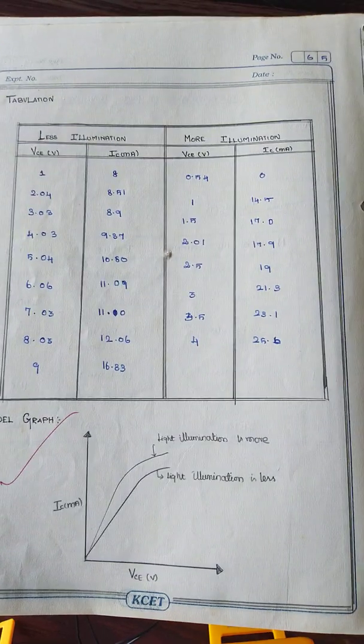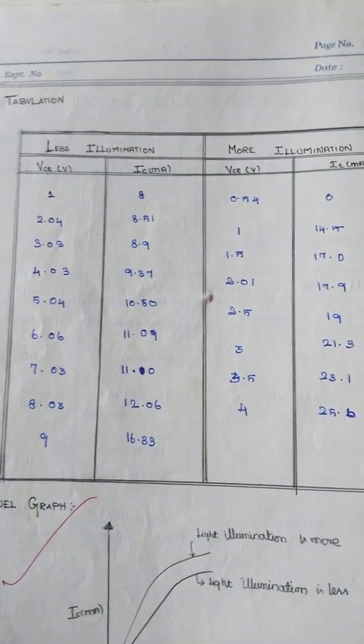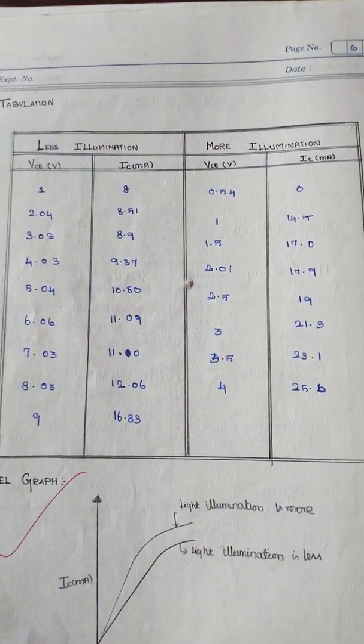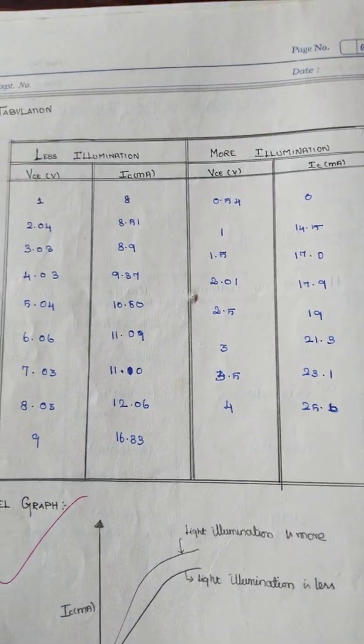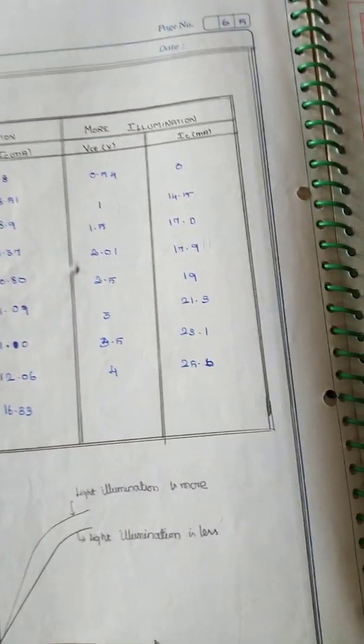Now there is a distance. That is less illumination, that is 5cm. That is more illumination, that is less illumination. That is the distance, that is the reading value.